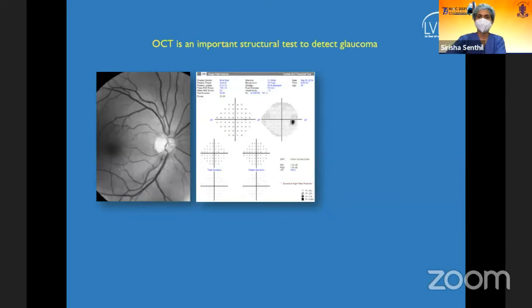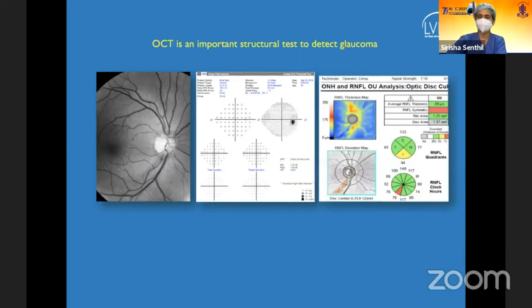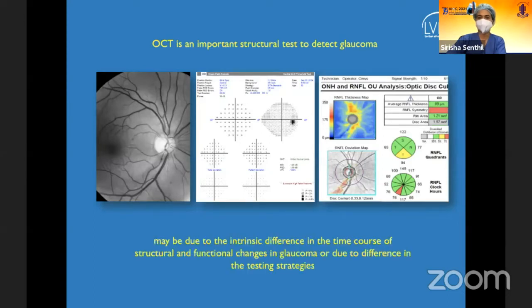OCT is important for early detection. This is a patient with pre-perimetric glaucoma — visual fields are normal, but OCT is able to pick up an obvious inferior NFL defect both in the thickness map and the deviation map.